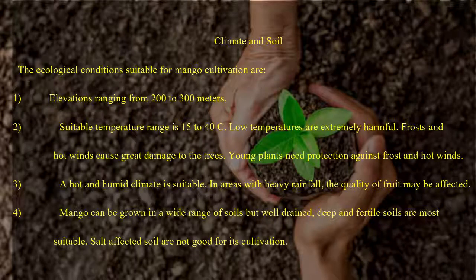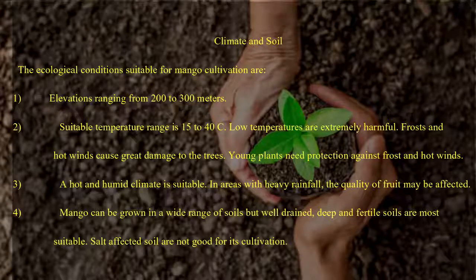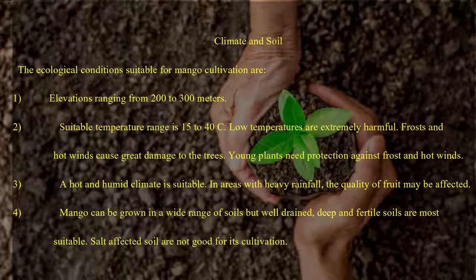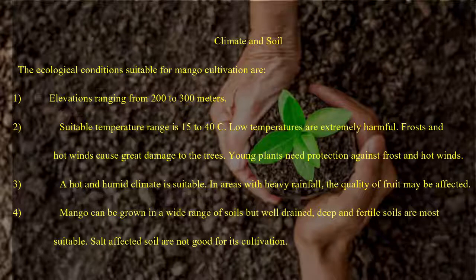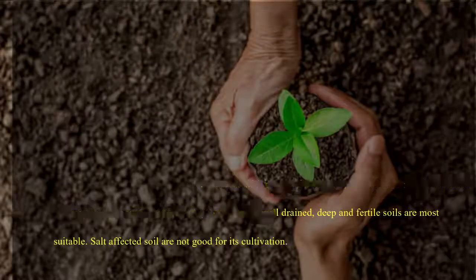3. A hot and humid climate is suitable. In areas with heavy rainfall, the quality of fruit may be affected. Mango can be grown in a wide range of soils, but well-drained, deep, and fertile soils are most suitable. Salt-affected soils are not good for its cultivation.